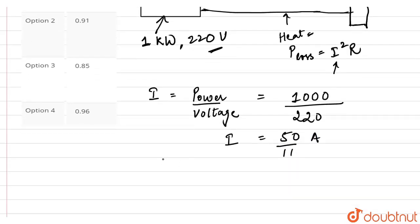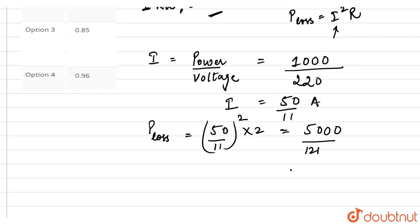So our power loss is (50/11) squared times 2. This equals 5000 divided by 121, which comes out to approximately 41.322 watts.